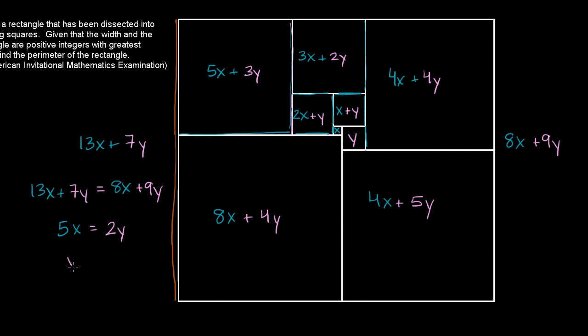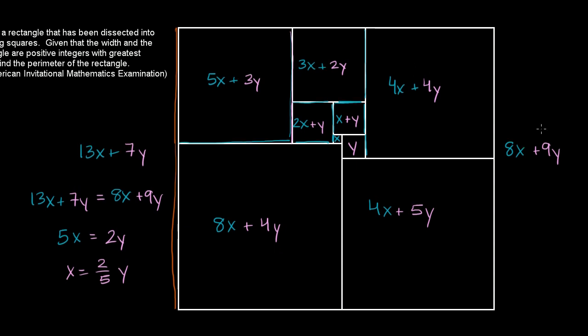Or you could say x is equal to 2 over 5 y. In order for these to show up as integers, we have to pick integers here. But let's see if we have any other interesting constraints if we look at the bottom and the top of this.